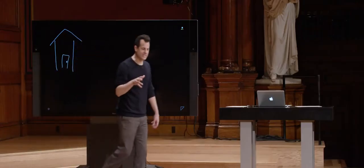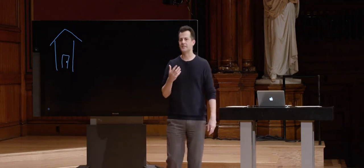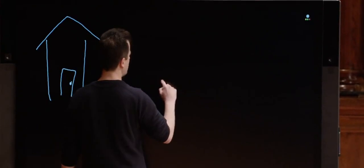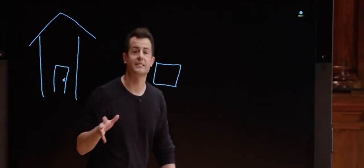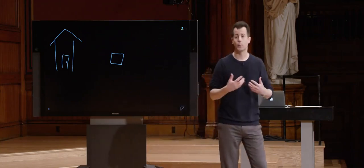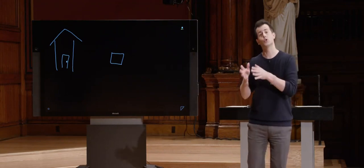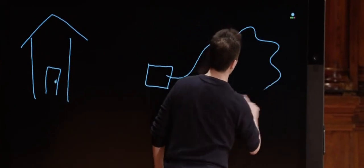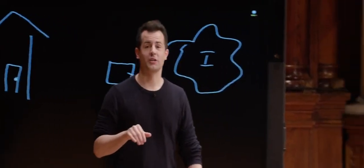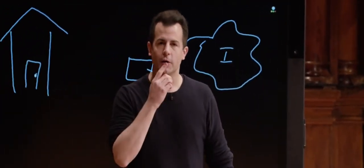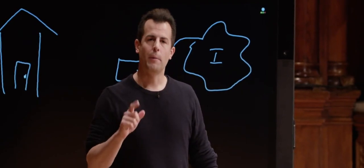Inside of that door is some number of devices that actually get you on the internet. Odds are inside your home you have a device called a cable modem, or a DSL modem, or a Fios device. That device is something you generally pay some number of dollars per month for, because you're paying for an ISP - an internet service provider. So that device is somehow connected to the internet, which for our purposes we'll draw as a cloud. That device comes from an internet service provider like Verizon, or Comcast, or any number of other providers.